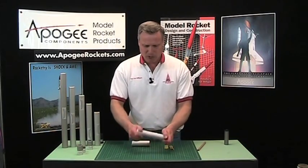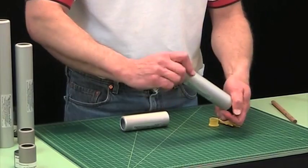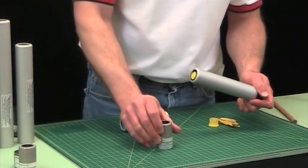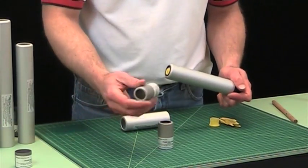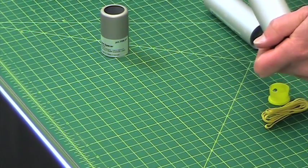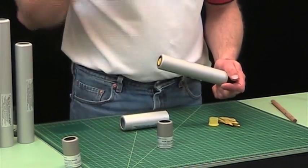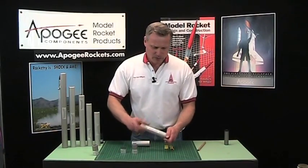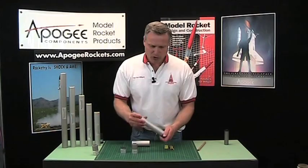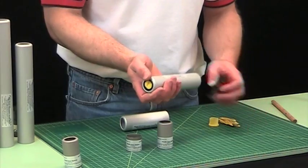The cool thing about the Cesaroni motors is that you can get these spacers here and they come in different sizes. You got the regular size which is these and then you got the XL size and this one will go in the XL casing. You can use up to two of these per case.